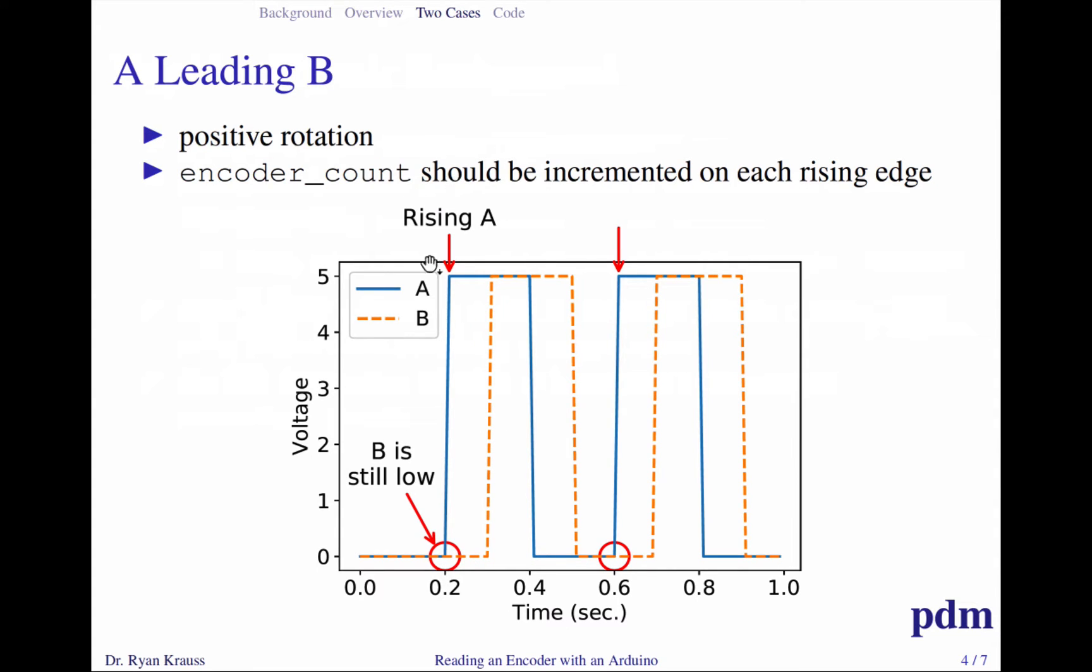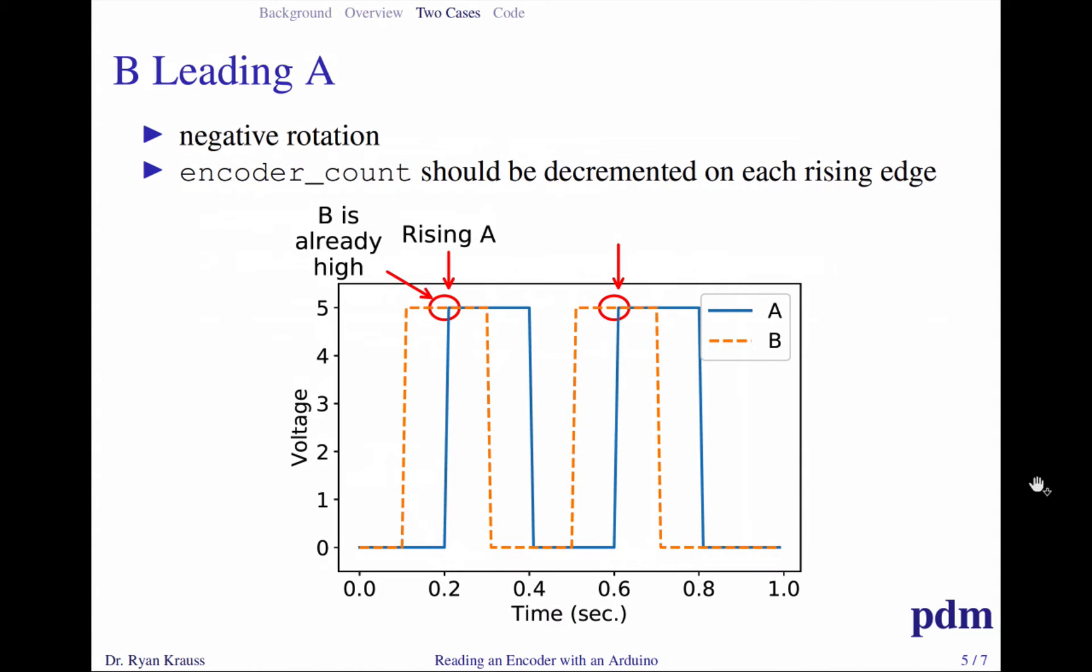The job of your ISR would be to say, okay, an A rising edge just happened. I know that happened because that's the only time this ISR is called. I'm going to look at the state of B. If B is still low, then B hasn't risen yet and A is going first, and I would call this a positive situation, so I would increment my encoder count.